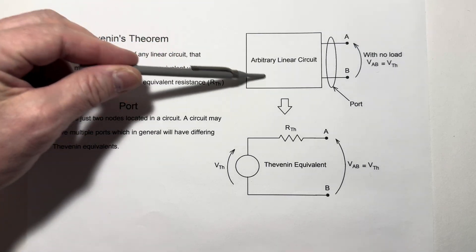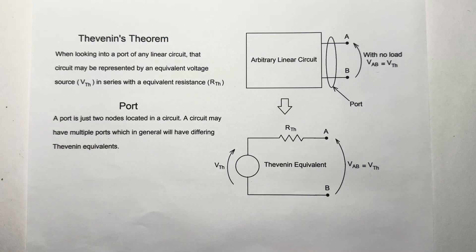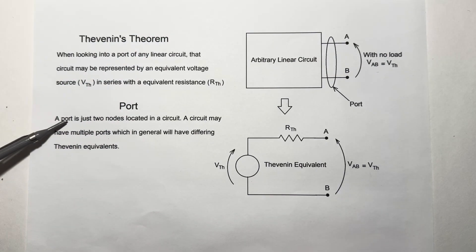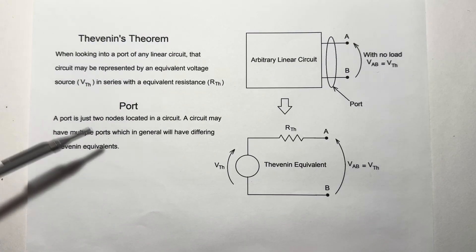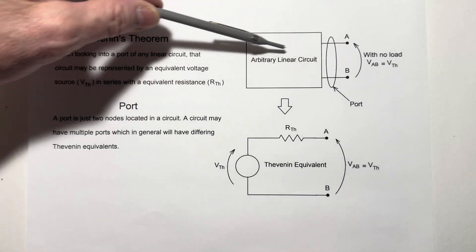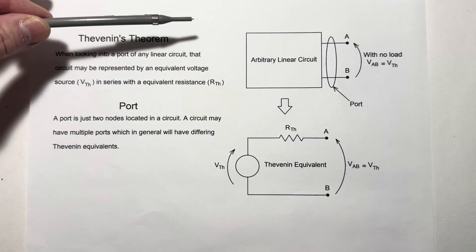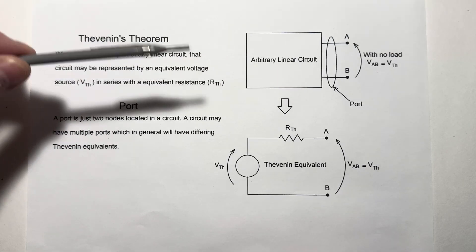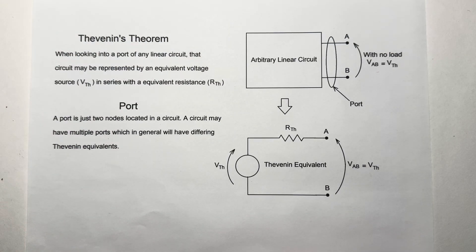In this case, we have a black box that contains a linear circuit, and we're looking at a port, which is any two nodes in the circuit. These wires are connected somewhere inside here to two different nodes, and we could have more than one port, and they all may have different Thevenin equivalents, but for right now, we're just looking at a circuit with one port.